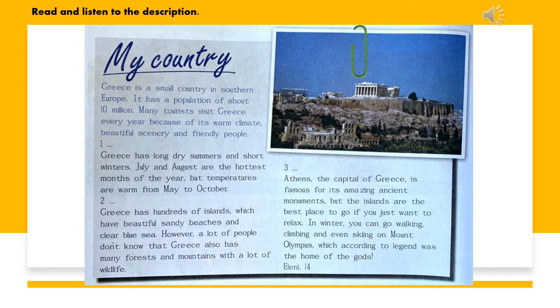Greece has long, dry summers and short winters. July and August are the hottest months of the year. But temperatures are warm from May to October.